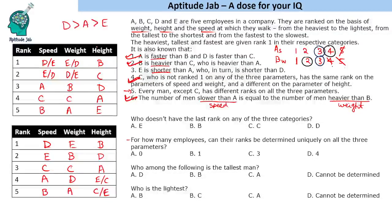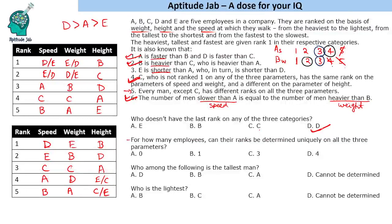Now answering the questions: who does not have last rank in any of the three categories? B, A, and E all have last rank somewhere, and we are unsure about C, but D definitely does not have last rank in any of the three parameters across either case.